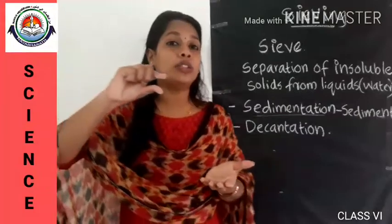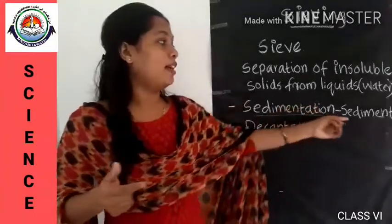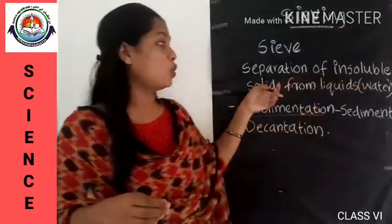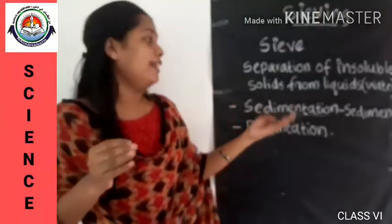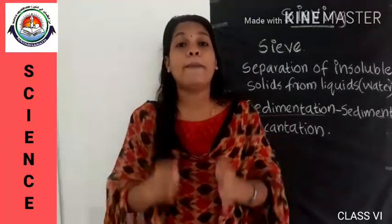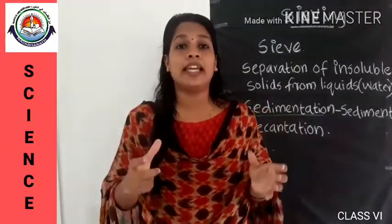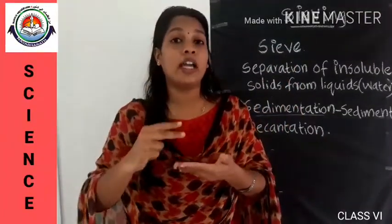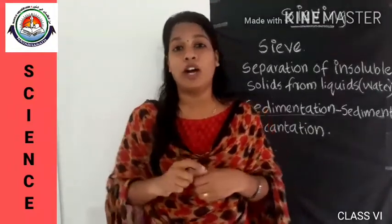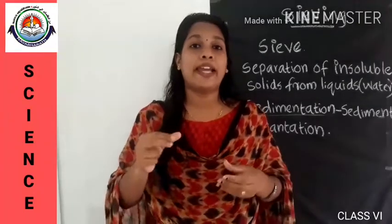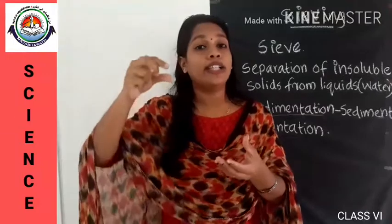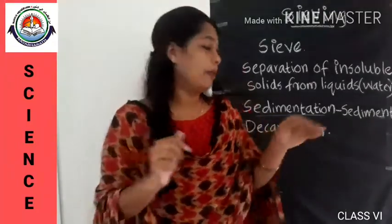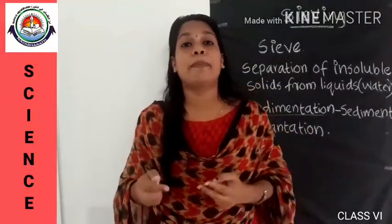The process of pouring out the clear liquid from the vessel without disturbing the sediment is called decantation. This technique is applied in the separation of insoluble solids from liquid. Similarly, the method of decantation can be applied in the case of immiscible liquids — for example, when we mix oil and water, we see two different layers because oil is immiscible with water, so we can separate the oil by decantation.